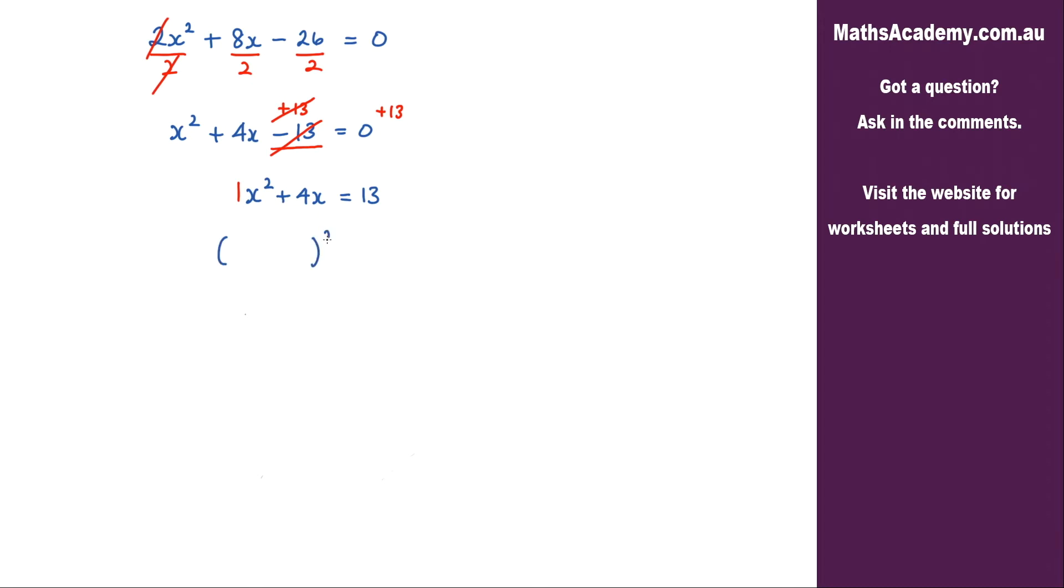In other words, something on the left squared is equal to 13 plus something else squared. Obviously we'll have an x in here. The x² will give me the x². I then need to look at the coefficient of the x term, so this plus 4. That will give me what goes in here and also over here squared.